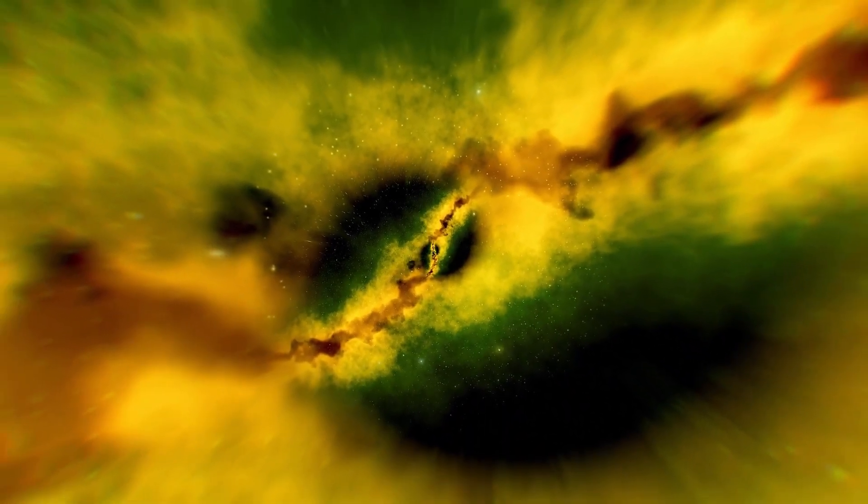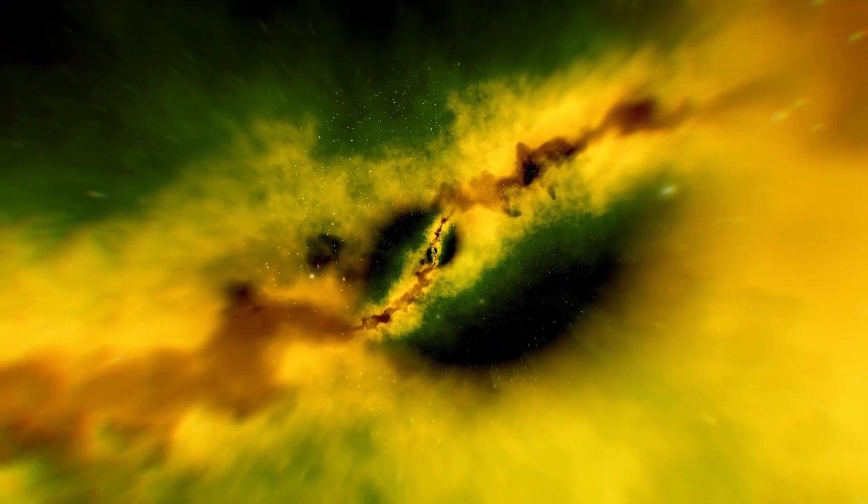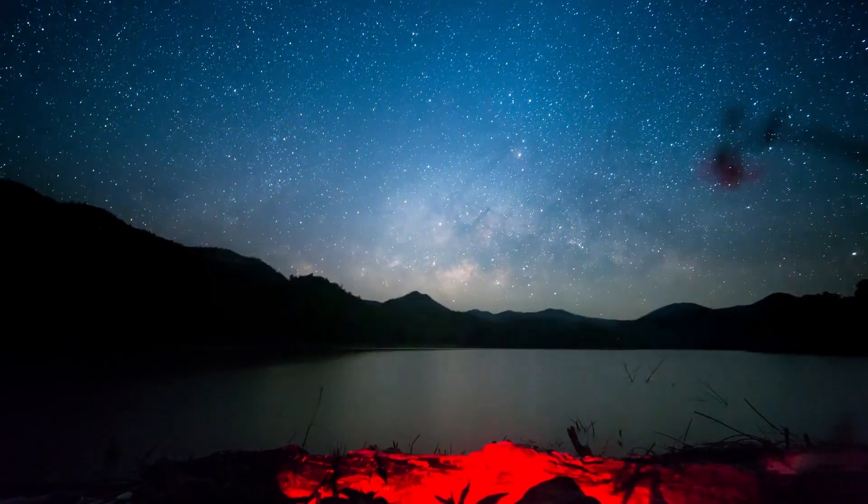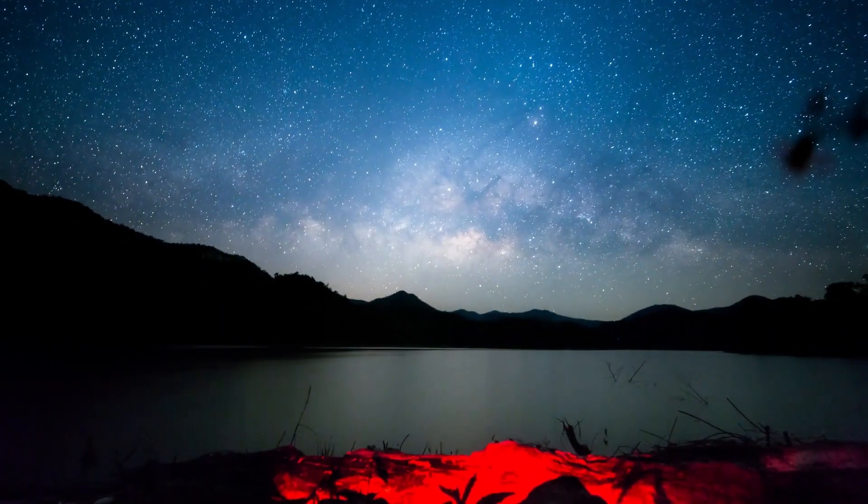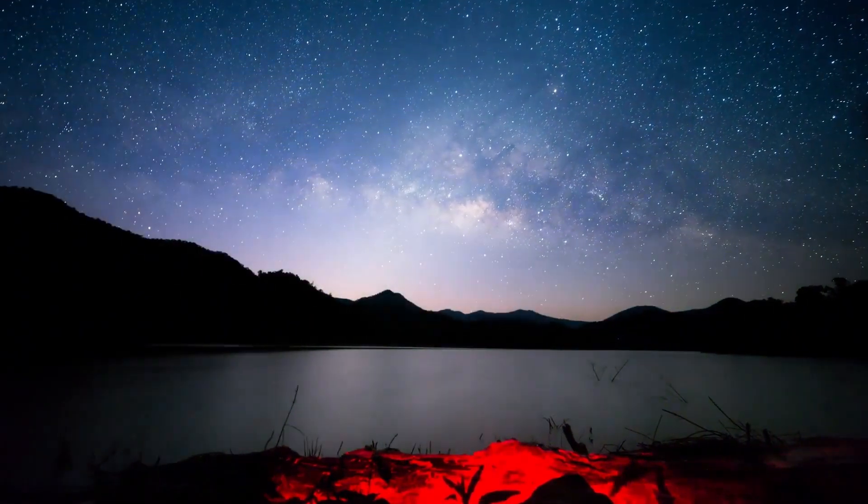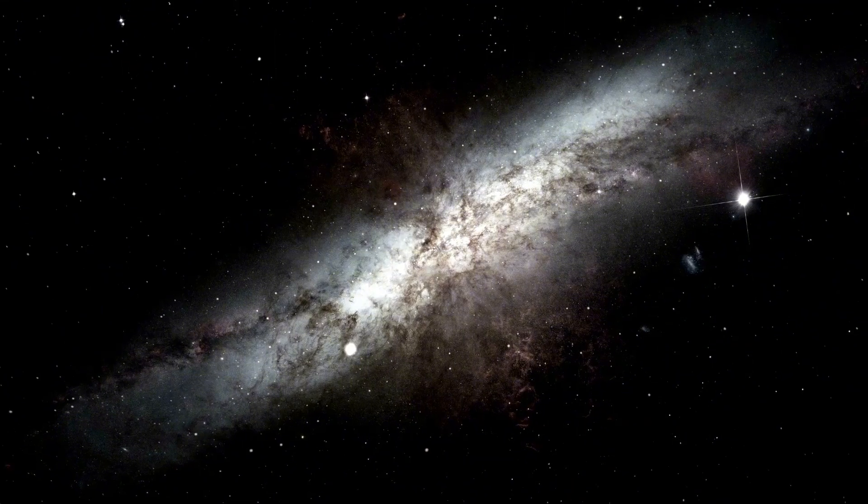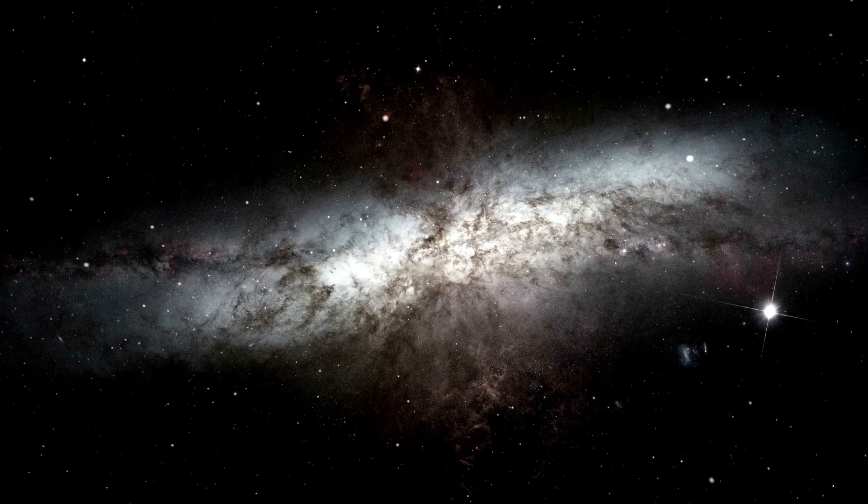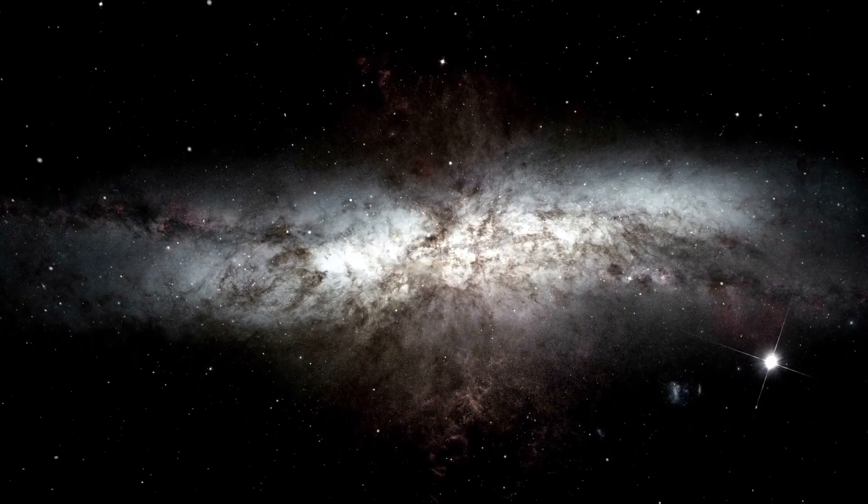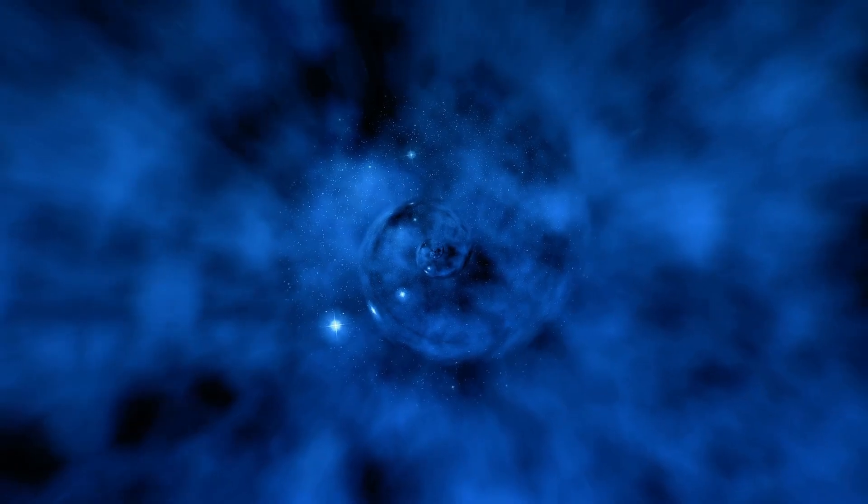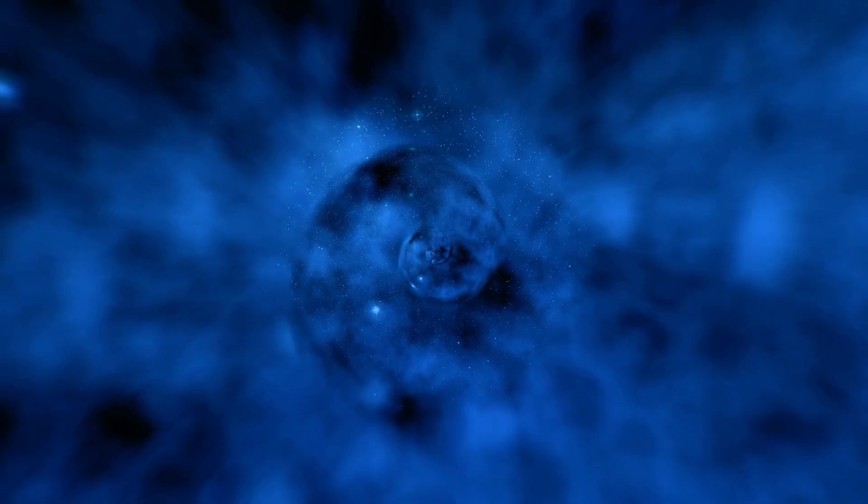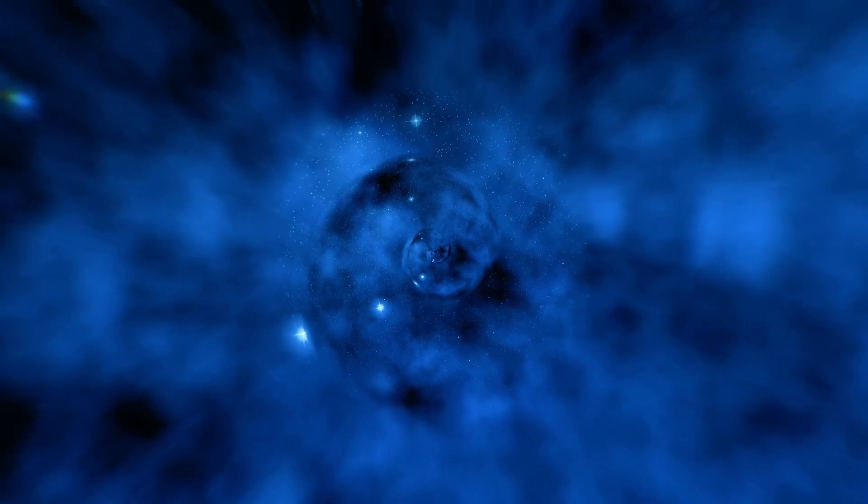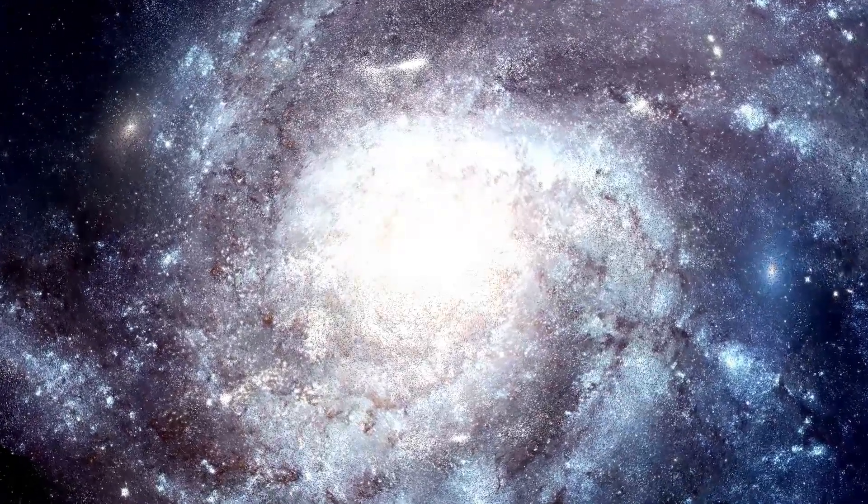The exoplanet WASP-18b is a gas giant 10 times more massive than Jupiter, the largest planet in the solar system. The planet's orbital distance of just 31 million kilometers around the sun-like star wasp 18b, which is around 400 light-years from Earth, is rather extreme. Mercury, the innermost planet in the solar system, orbits the sun at a distance of 634 million kilometers. For comparison, this exoplanet is so near to its parent star that its atmosphere reaches temperatures where most water molecules disintegrate.